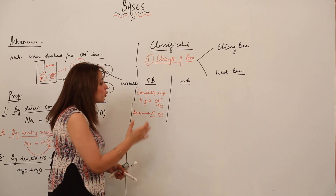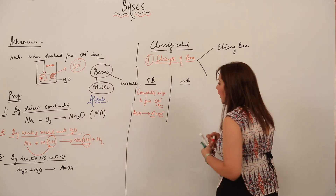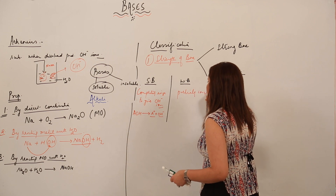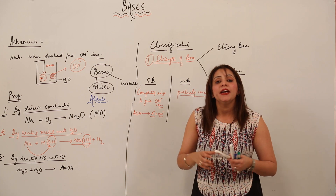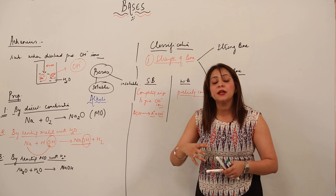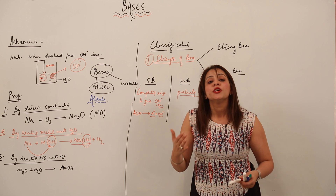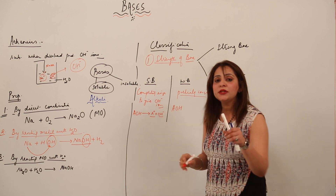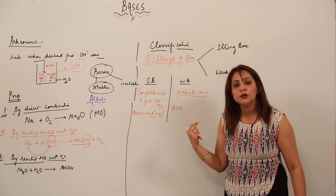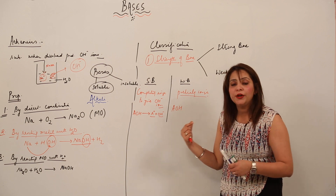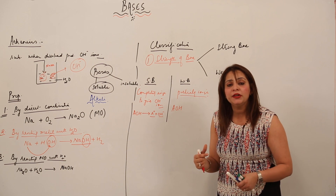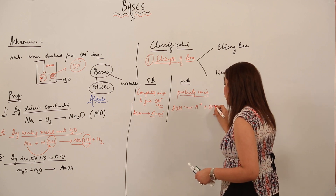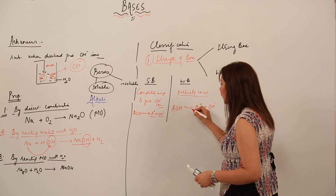A weak base is one which gets partially ionized — it breaks but doesn't completely break. It partially dissociates to produce hydroxide ions. For example, if AOH acts as a weak base, when dissolved in water it will partially dissociate to form A⁺ and OH⁻, and these ions also have the ability to recombine to form the AOH molecule.